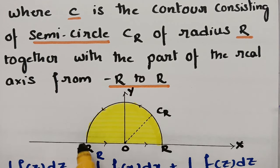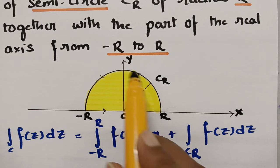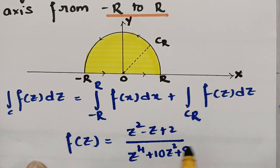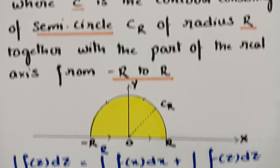The total integral is split into two parts: the integral from minus r to plus r of f(x) dx along the real axis, and the integral over C_r, the semicircle, of f(z) dz. Our f(z) is clearly z² - z + 2 divided by z⁴ + 10z² + 9.